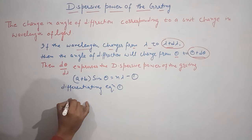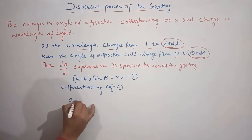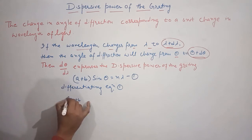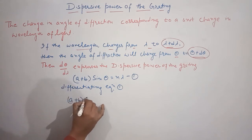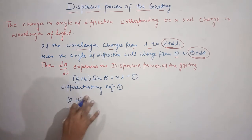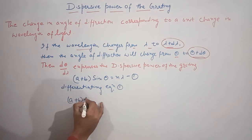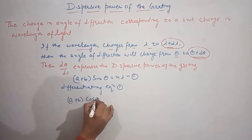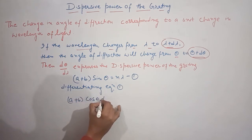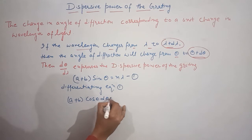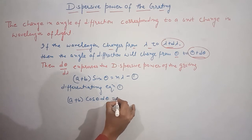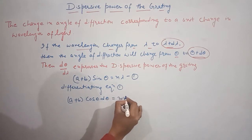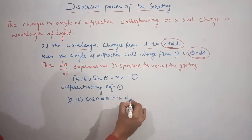Differentiating equation 1, we have: (a + b) cos θ · dθ = n · dλ.